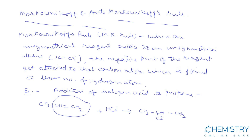Addition of a reagent to an unsymmetrical alkene takes place according to Markovnikov's rule, so we get 2-chloropropane.